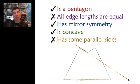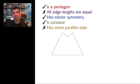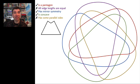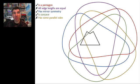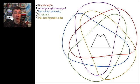So we have to find a place for that polygon inside our Venn diagram. Does it go in the middle? No, because the middle would mean that this is a pentagon, that all of its sides are equal, that it is mirror symmetry, that it is concave, and that it has some parallel sides. So clearly it doesn't go in the middle.